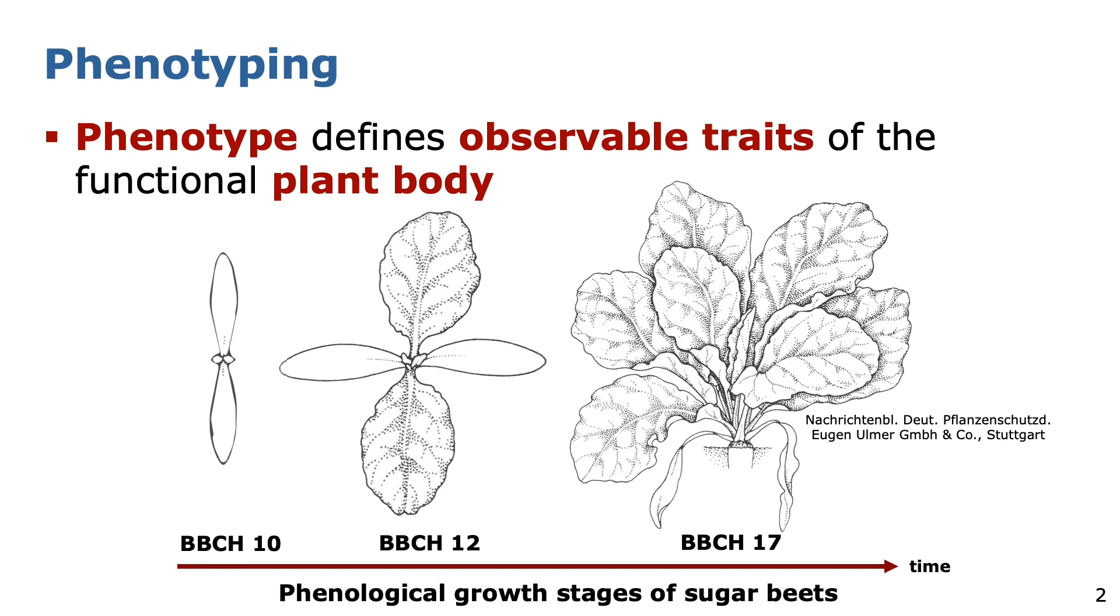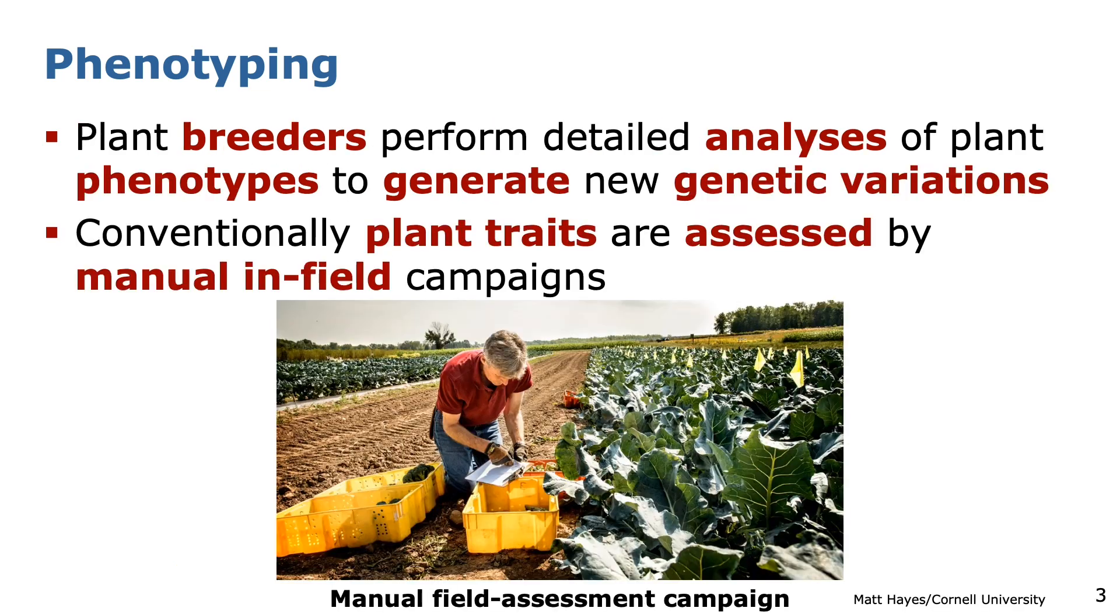The phenotype defines observable traits of the functional plant body, for example its total number of leaves as well as their shape and size. These features are commonly used to describe plant growth stages, for example via the BBCH index. Plant scientists and breeders rely on these features to perform detailed analyses of plant phenotypes to generate new genetic variations of crops that show desired traits regarding their performance.